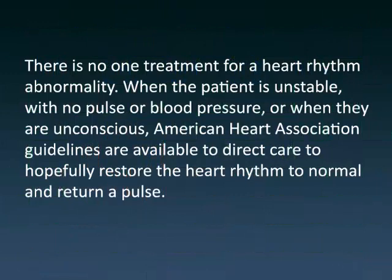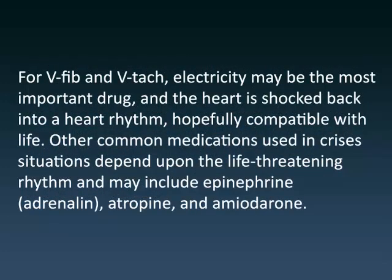There is no one treatment for a heart rhythm abnormality. When the patient is unstable, with no pulse or blood pressure, or when they are unconscious, American Heart Association guidelines are available to direct care to hopefully restore the heart rhythm to normal and return a pulse. For V-fib and V-tac, electricity may be the most important drug, and the heart is shocked back into a heart rhythm, hopefully compatible with life. Other common medications used in crisis situations may include epinephrine, adrenaline, atropine, and amiodarone.